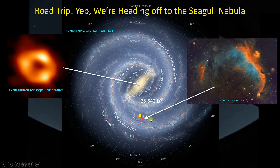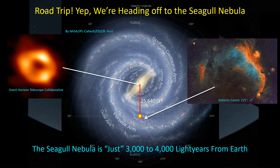The Seagull Nebula is located at a galactic coordinate of 225 degrees, which makes it one of the targets we get in the late nebula season as we're starting to move into galaxy season. It's roughly estimated between 3,000 to 4,000 light years away, and at least on the scale of the galaxy, it doesn't look like it's that far away.